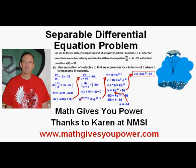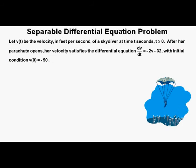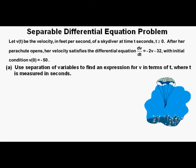This is a Separable Differential Equation Problem, and I give thanks to Karen at National Math and Science Initiative for providing this problem. Let v be the velocity in feet per second of a skydiver at time t seconds, where t is greater than or equal to zero. After her parachute opens, her velocity satisfies the differential equation dv/dt equals negative 2v minus 32, with the initial condition v of zero equals negative 50. Part A: use separation of variables to find an expression for v in terms of t, where t is measured in seconds.